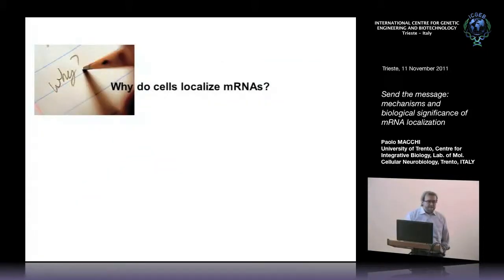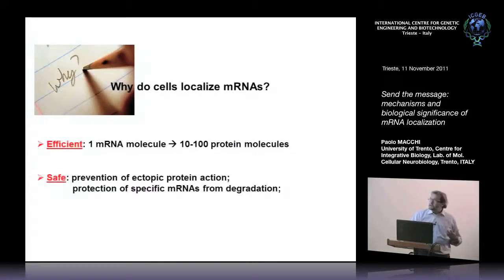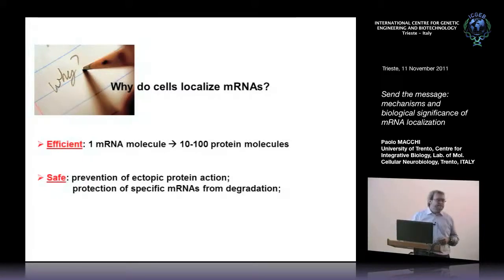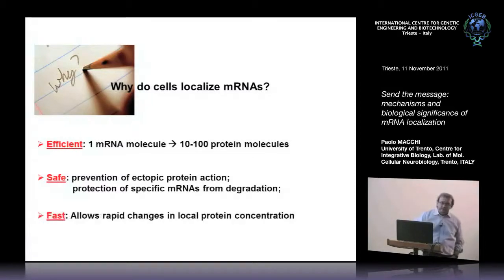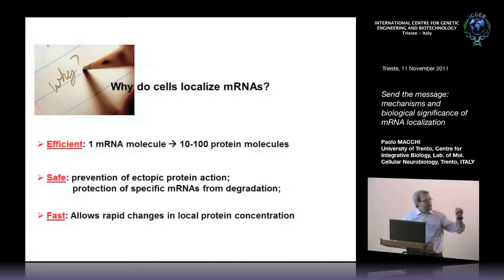Why do cells localize mRNAs? First, it's an efficient method — with one mRNA you can get 10 to 100 protein molecules. It's a safe process because you can prevent ectopic protein activity, especially important during long-distance transport. It protects specific mRNAs from degradation. And it's a fast method, because it allows rapid changes in local protein synthesis: you have the mRNA there, a stimulus arrives, it triggers translation, and the resulting protein can locally modify a specific subcellular compartment.